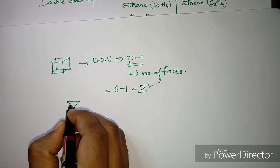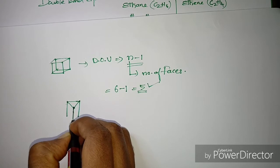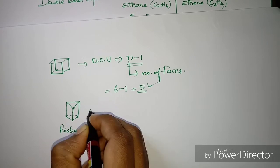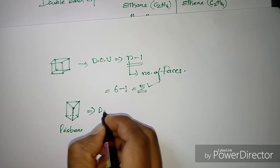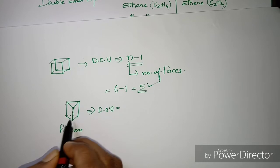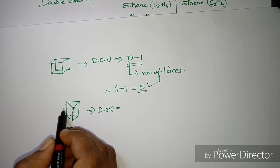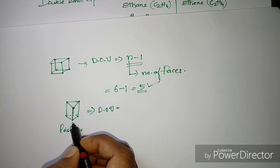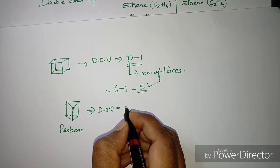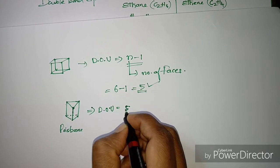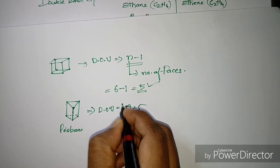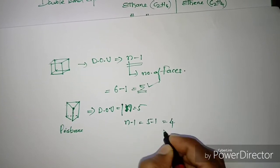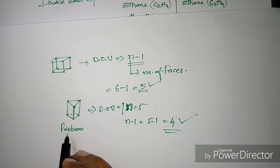Now if we take one more 3D structure — prismane. For prismane, the degree of unsaturation: how many faces does it have? Lateral faces are three, top and bottom are two, so total faces n equals five. Therefore n minus one is five minus one, which equals four. The degree of unsaturation of prismane is four.